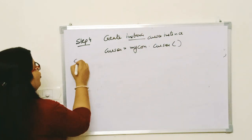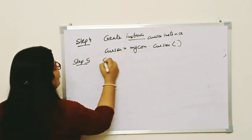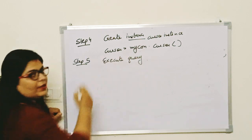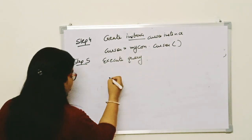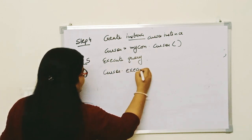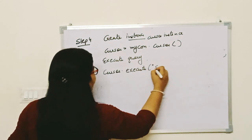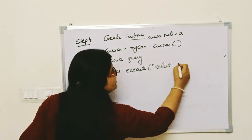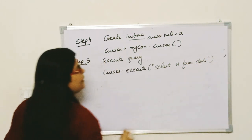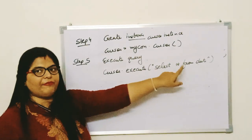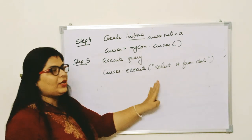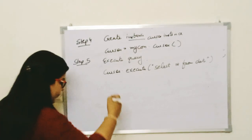In step five we have to execute a query. Whatever query you want to execute, you write: cursor.execute(). For example, you write the query as: SELECT * FROM data — meaning whatever query you want to execute, you execute it in the fifth step.